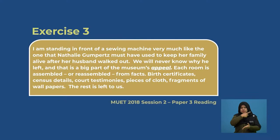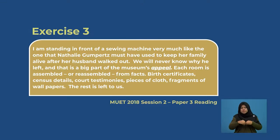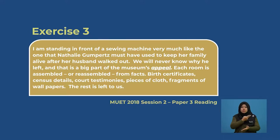Let's continue with exercise three. 'I am standing in front of a sewing machine very much like the one that Natalie Gumperts must have used to keep her family alive after her husband walked out. We will never know why he left. And that is a big part of the museum's appeal. Each room is assembled or reassembled from facts: birth certificates, census details, court testimonies, pieces of cloth, fragments of wallpapers. The rest is left to us.' Look at the underlined word 'appeal.' What is the meaning of this word?